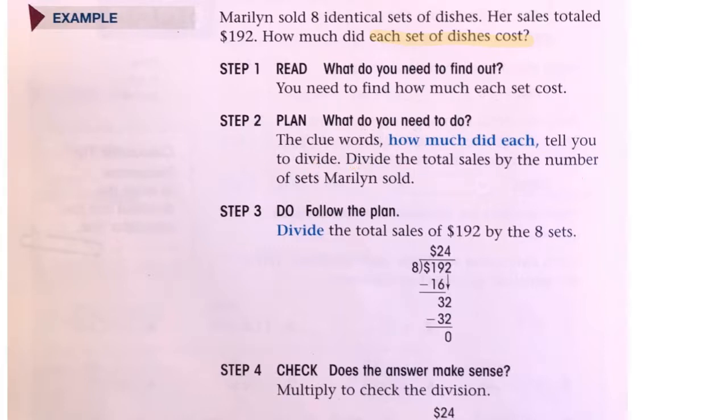Step three is to do it. Follow that plan: divide the total sales of $192 by the 8 sets. The number getting divided goes in the box, the number doing the dividing goes outside of the box. So two times eight is sixteen, minus leaves us with three. Bring down the two. Four times eight is thirty-two, no remainder, so twenty-four dollars.